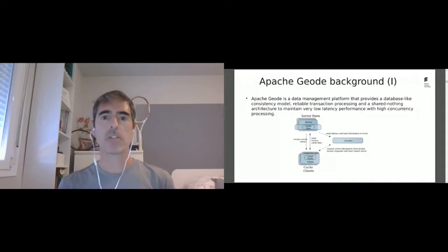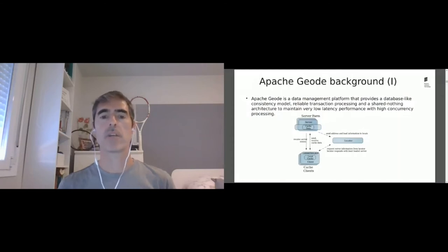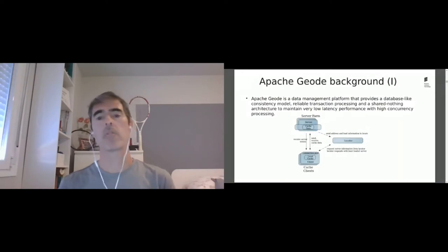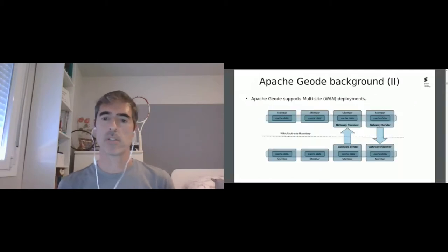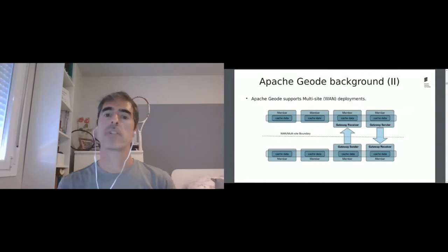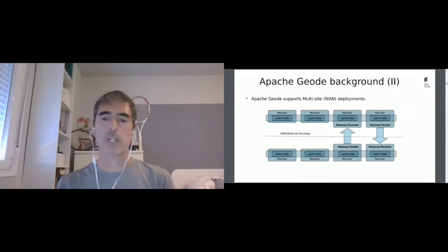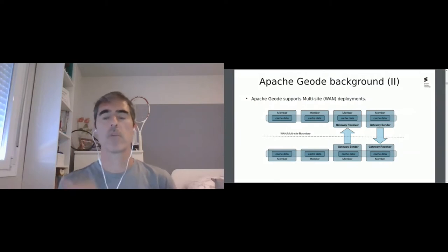An interesting feature that Apache Geode provides is multi-site or WAN deployment. Apache Geode allows having several Geode clusters connected via a wide area network, which are kept in sync via asynchronous replication. There are two elements in the Apache Geode architecture providing this functionality: gateway receivers and gateway senders. Gateway senders run in cache servers and are responsible for sending events generated inside the server to the remote site. In the remote site, the gateway receiver is the element in charge of receiving events from the other site to keep both sites in sync.